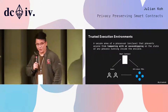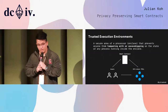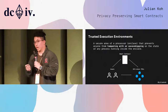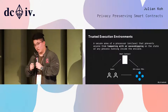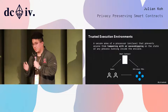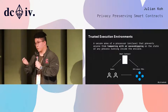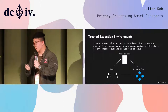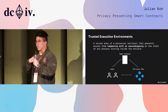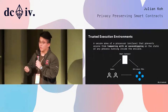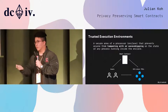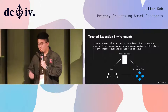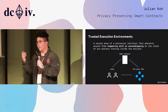The first one — TEEs — is the idea that on computer chips there can be a separate environment hidden from the OS. This special area is called an enclave. Imagine if this enclave had a private key and a public key, and you encrypt a file with the enclave's public key — only the enclave can decrypt it. No one else in the entire world can see what it actually is, and that's how we achieve private computation.